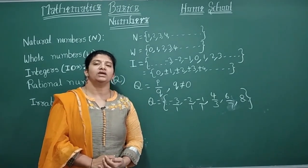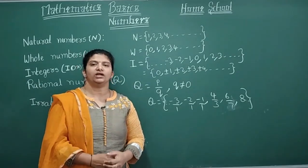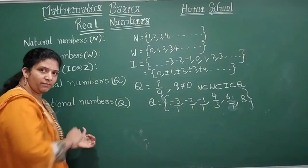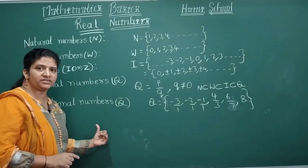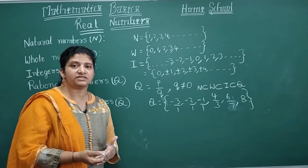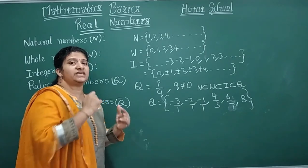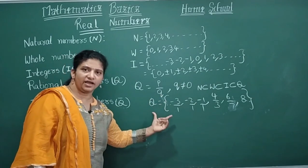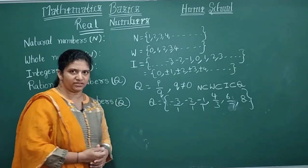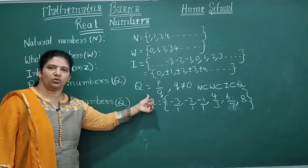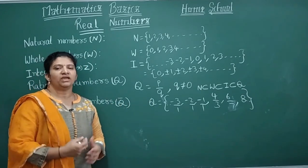Rational numbers are numbers which can be represented in the form P by Q where Q cannot be equal to 0. The next type is irrational numbers — numbers which cannot be expressed in the form P by Q are called irrational numbers. Irrational numbers are represented by Q-bar.